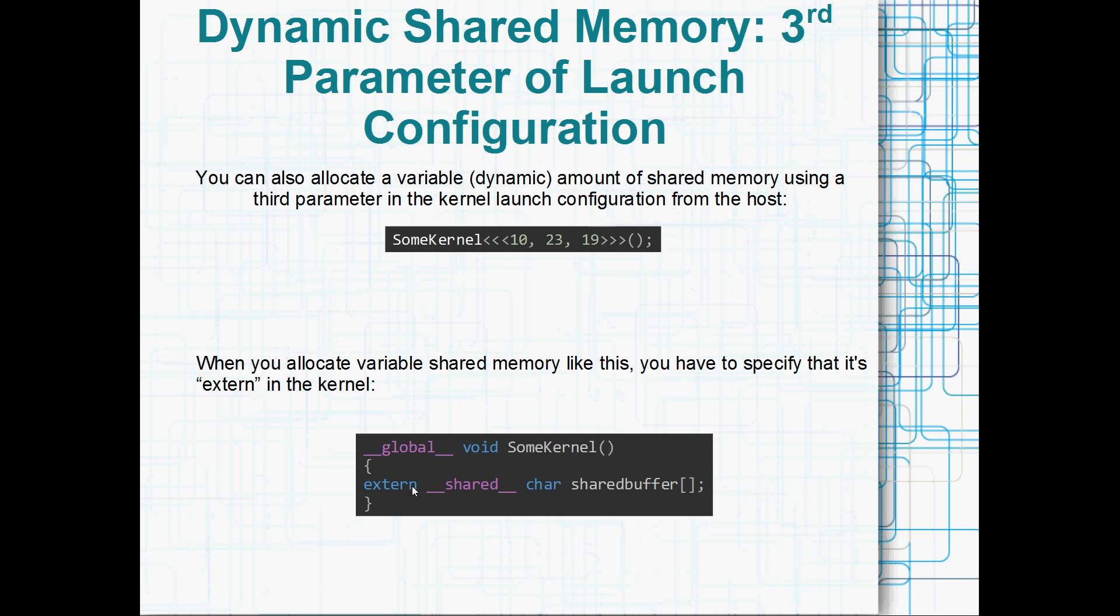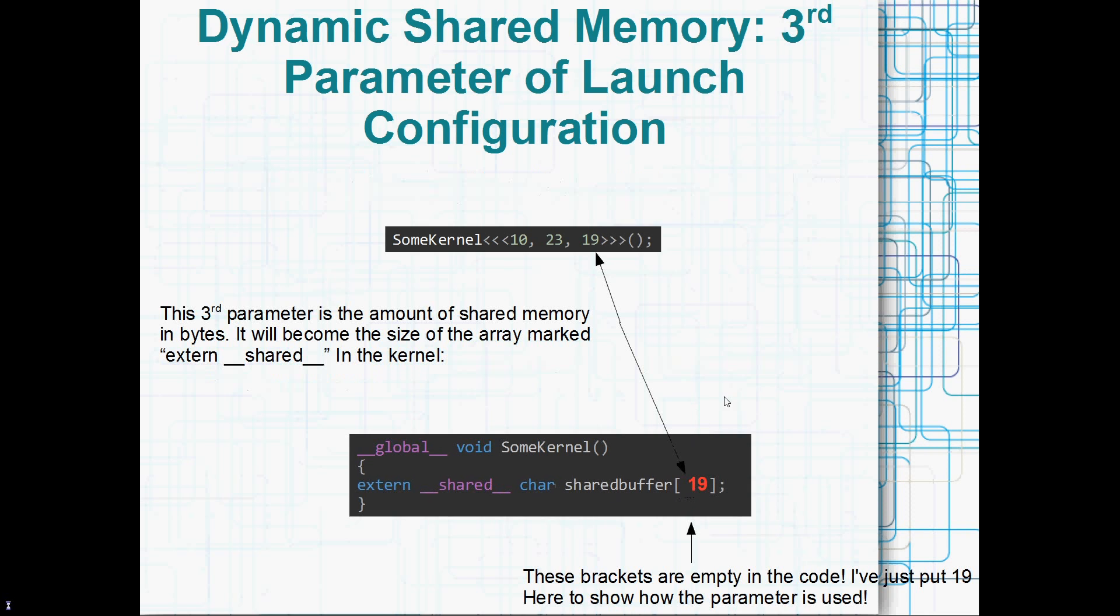So when you do the allocation of shared memory dynamically like this, you've got to add extern to the declaration of the shared memory in the kernel. So something like extern __shared__ char shared_buffer[], and then just open close brackets and keep your brackets empty. That's going to be read as 19. Yeah, because 19 was the third parameter that I passed in the launch configuration. So this 19 just here in the launch configuration can be a variable. Yeah, that's why it's dynamic, so you can change the amount of shared memory per call to a kernel. You don't actually put anything in the brackets here, I just put 19 there as an illustration.